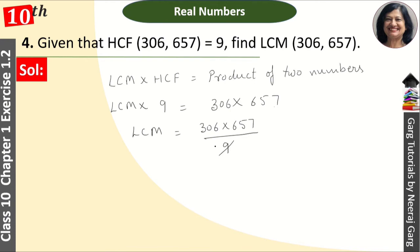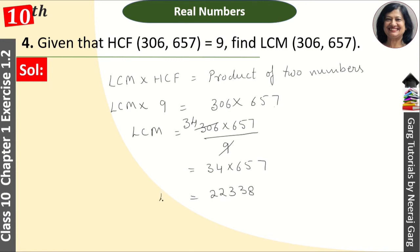LCM = (306 × 657) / 9. We can see that 9 cancels directly: 9 × 3 = 27 and 9 × 4 = 36, giving us 34 × 657. When we multiply this out, that equals 22,338. So the LCM is 22,338.